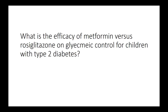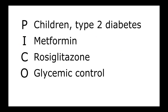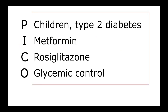In this more focused question, our patient population is children with type 2 diabetes. The intervention is metformin, and this is compared to rosiglitazone, and the outcome is glycemic control. With our focused question and the parts of PICO defined, we now have a list of terms that we can use to start searching the literature.